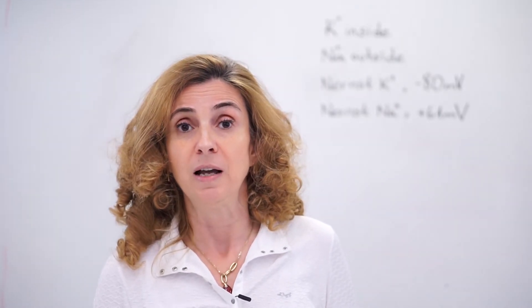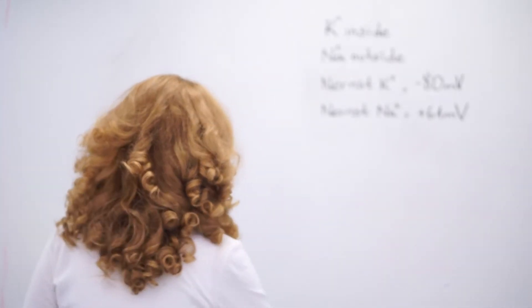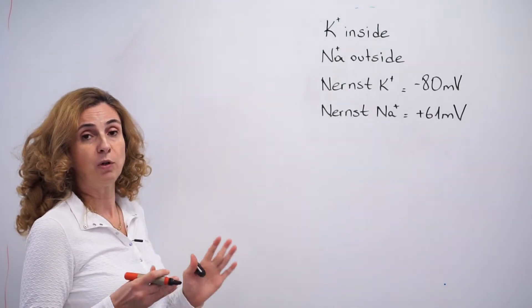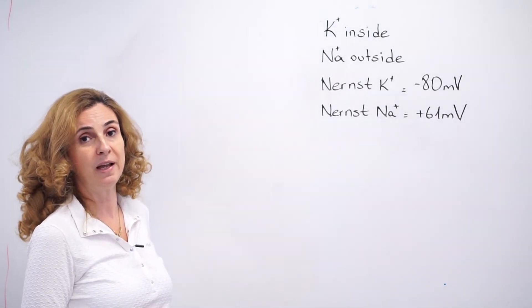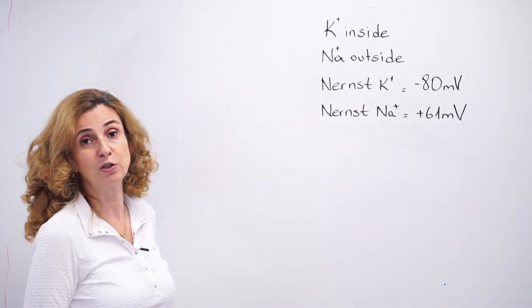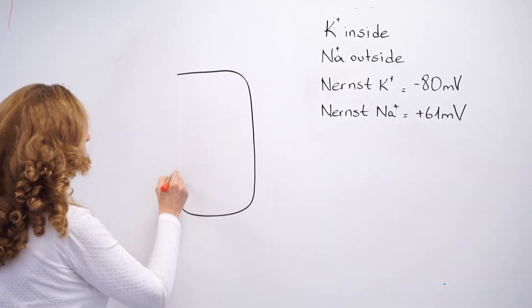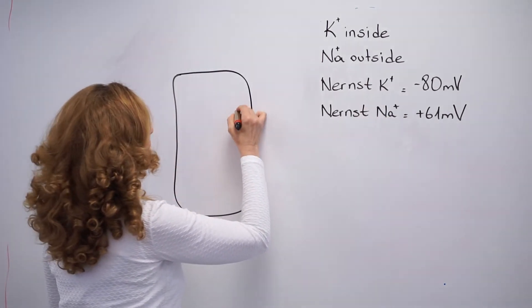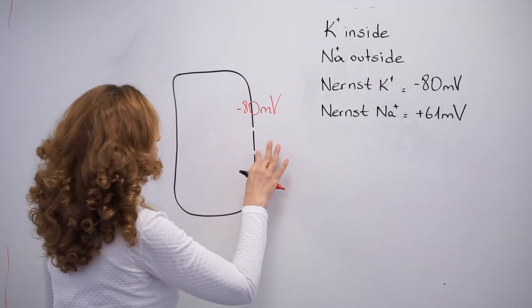So what do we see when we look at a living cell in real time? We can start with cell number one. I'm going to explain what's happening at the resting condition in cell number one, and then move on to cells three and four, which have similar conditions. In cell number one, the resting membrane potential is minus 80 millivolts.